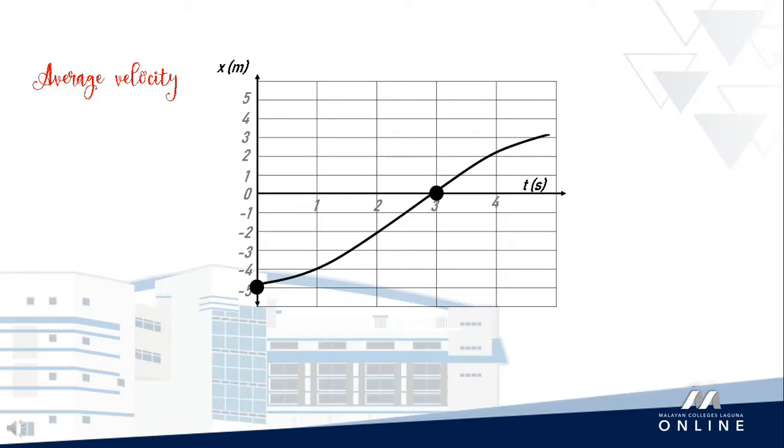Let us say we wanted to find the average velocity of the armadillo for the time interval t = 1 second to t = 4 seconds. We start this by drawing a straight line that connects the point on the position curve at the beginning of the interval and the point on the curve at the end of the interval.